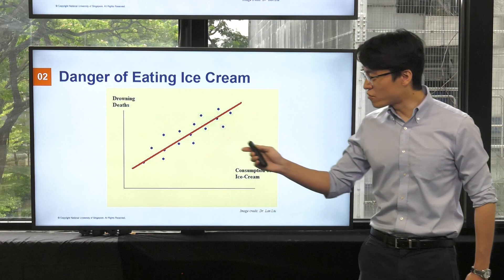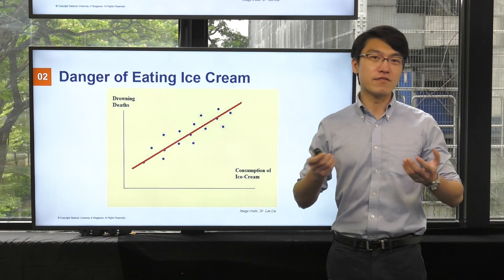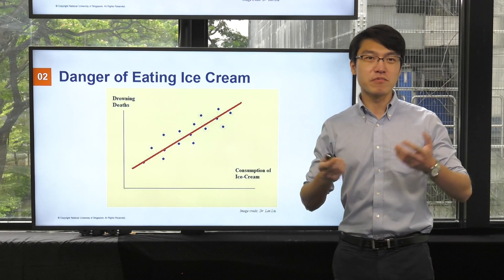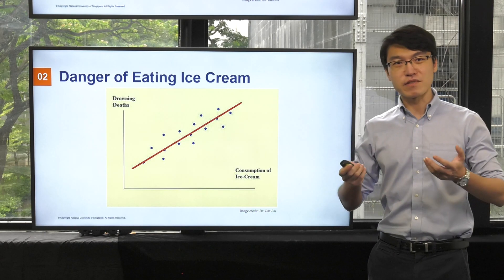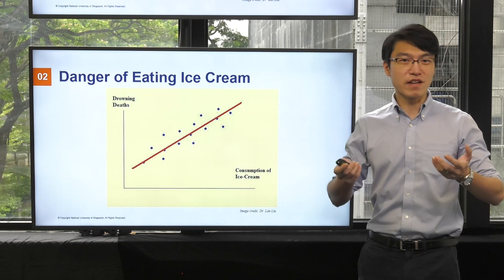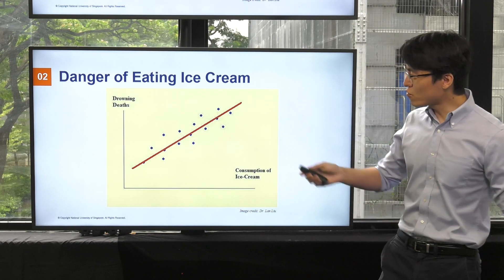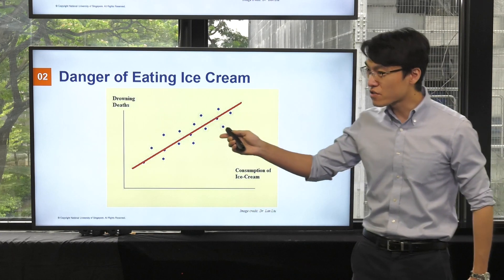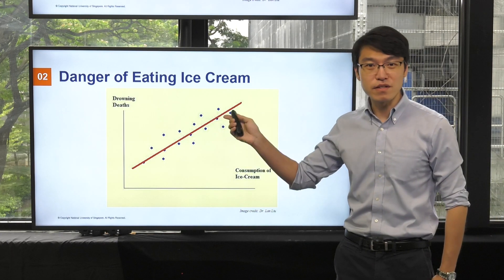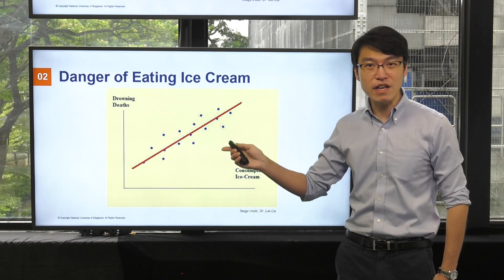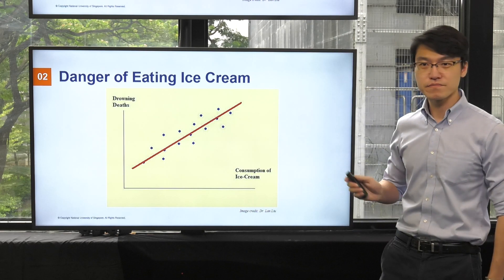Conversely, during winter, we see that less people will eat ice cream because it's quite cold, and less people would like to go out for a swim. And so we can see a correlation between the number of drowning deaths and the consumption of ice cream.